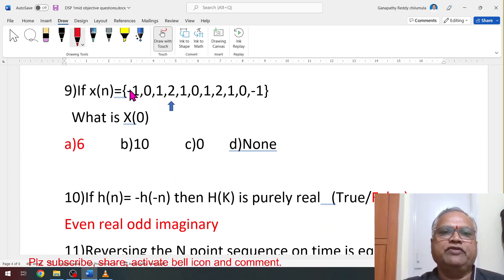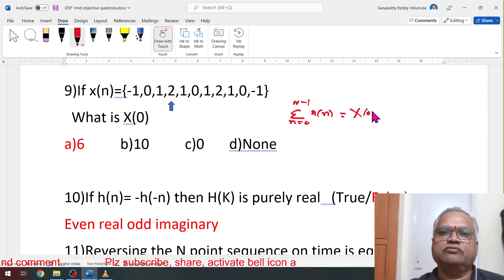Then if x(n) is given, some values are given. Then what is DFT? Capital X(0). What is the formula here? Already discussed formula. It is summation n equal to 0 to n-1 x(n). This is the formula. Capital X(0). Just go for this summation, you will get 6.